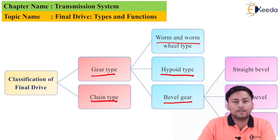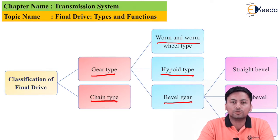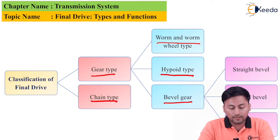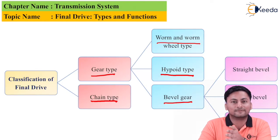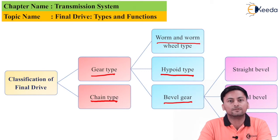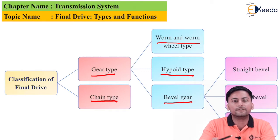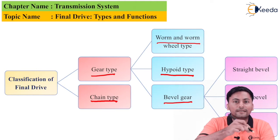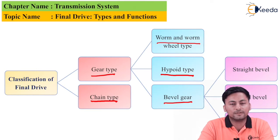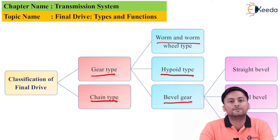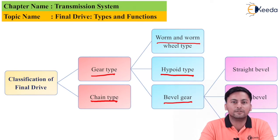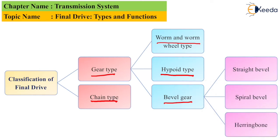The hypoid and bevel types are similar in terms of construction. Here the gears are not straight — they are at a particular angle. This helps achieve another objective: the gears will slide on each other, resulting in a very smooth drive, and we also get a reduction in noise.